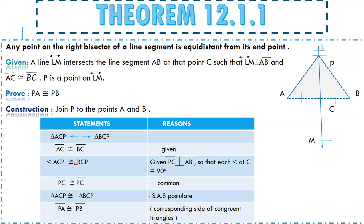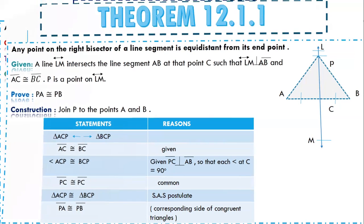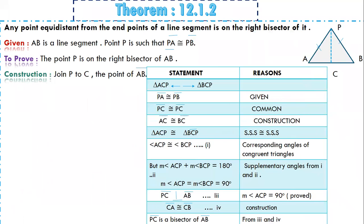When the triangles are congruent, each side and each angle of the given triangles are congruent. So we can now say easily that PA is congruent to PB, and the reason is corresponding sides of congruent triangles. That completes theorem one. Now we come to theorem number two, which is the converse of theorem one.